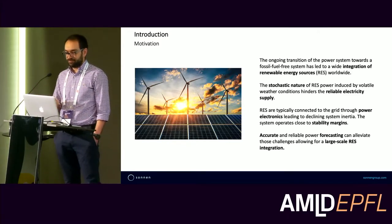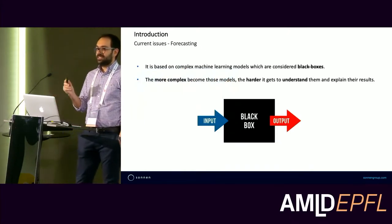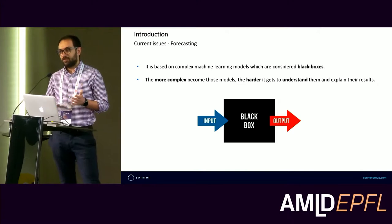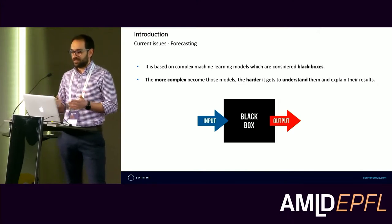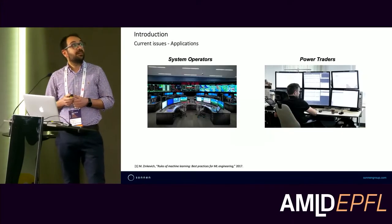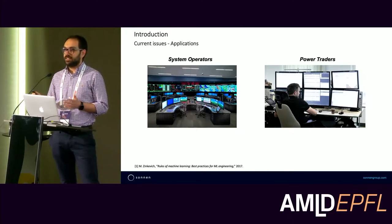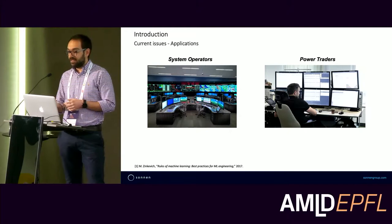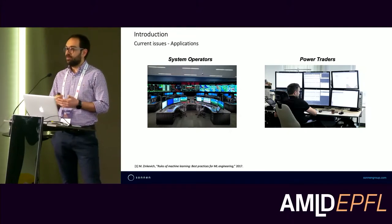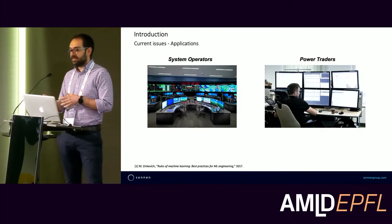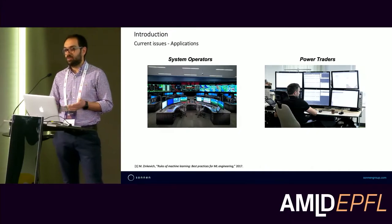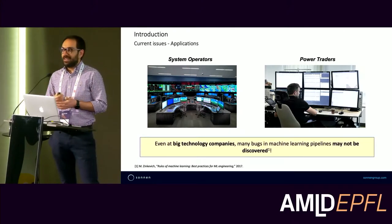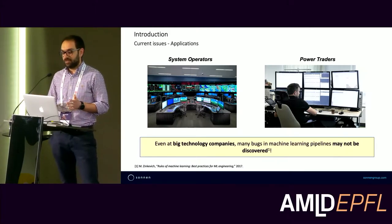However, most of the existing state-of-the-art approaches found in the literature are based on complex machine learning algorithms which are considered black boxes. The more complex those models become, the harder it gets to understand and explain the results. In safety-critical applications like power system operation and control, trust in those black-box models may be questioned by system operators. Additionally, renewables are traded in the electricity market, and bugs in forecasting models may lead to a loss of profit.